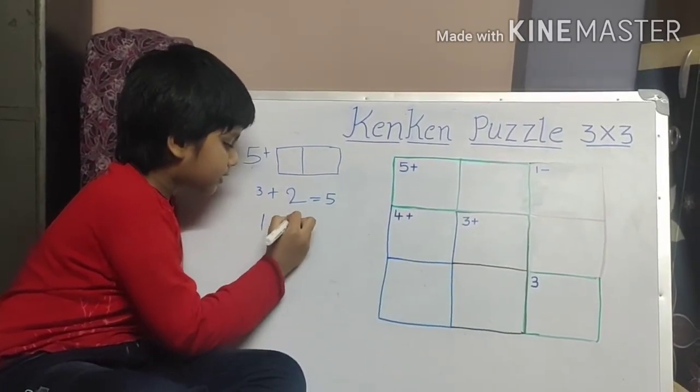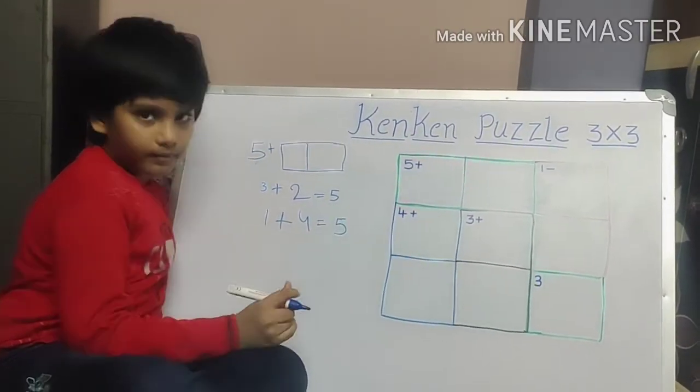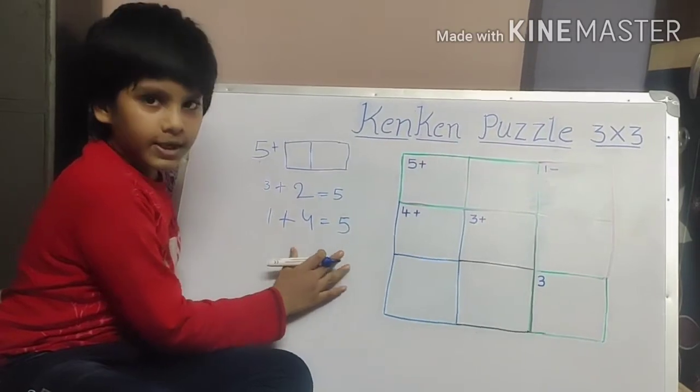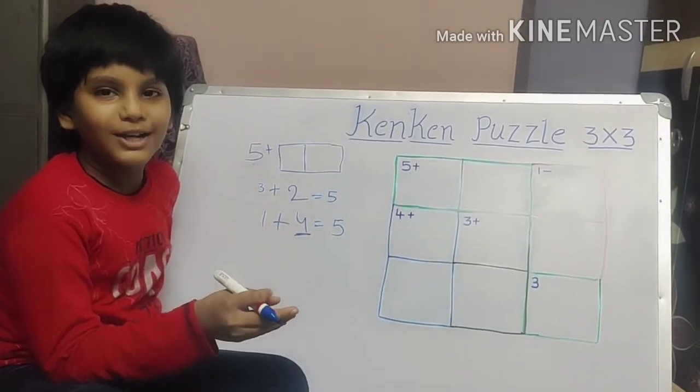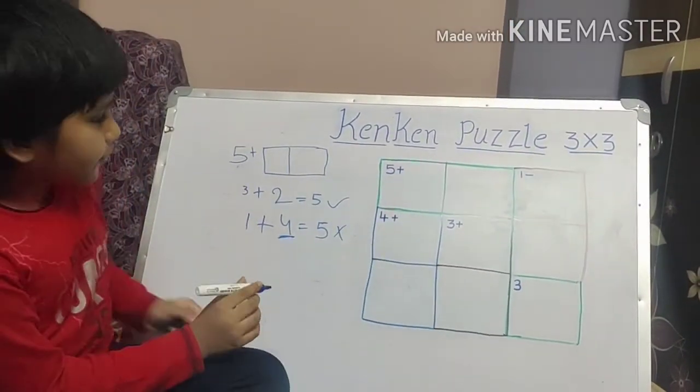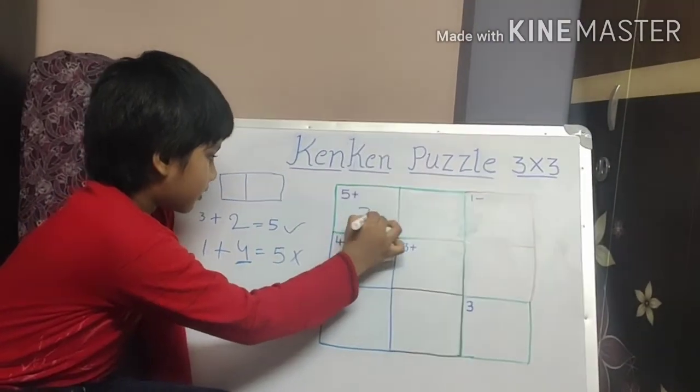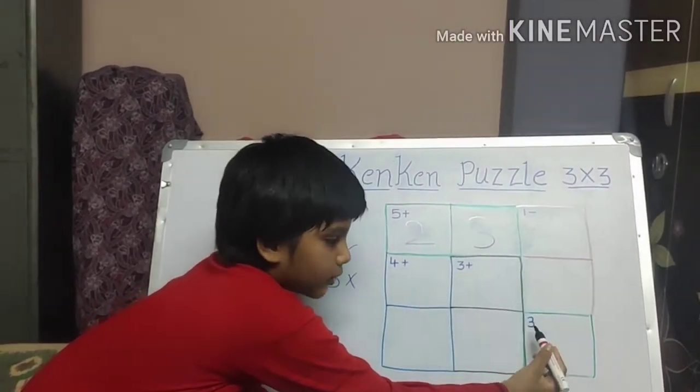And one plus four is equal to five. This is not possible because there is four. We have to use only one, two, three numbers. This is wrong. If you take a two or three box, there is only three. We have to write that three only.